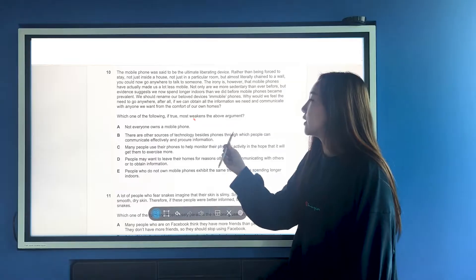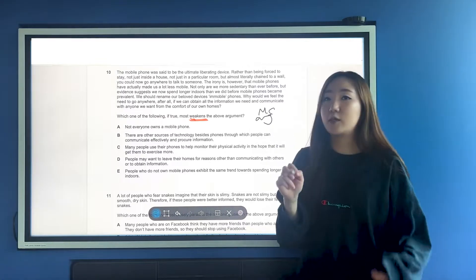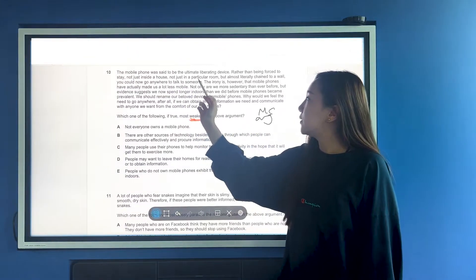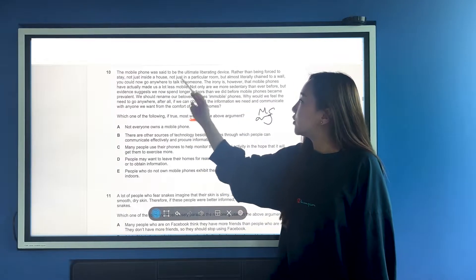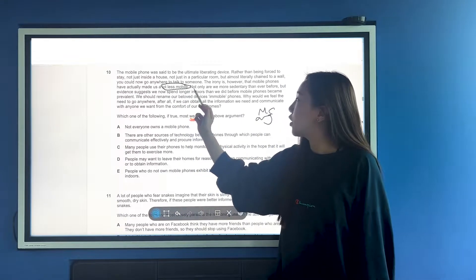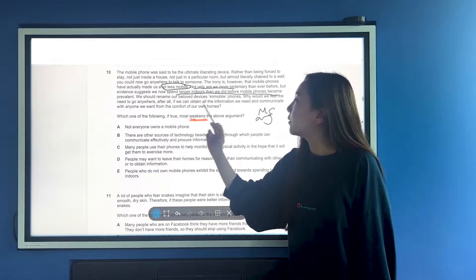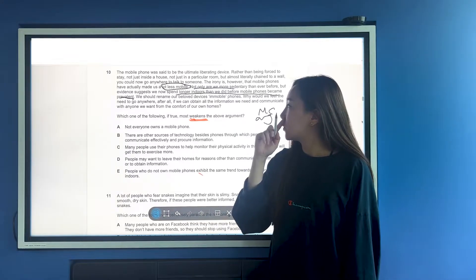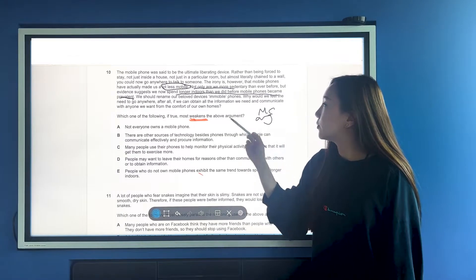Okay, so we've got the weakens the argument question here. In order to do this one, again, we need main conclusion, we need argument, and you want to kind of see an exemplification of whatever the flaw would be. So, let's have a look. The mobile phone was said to be the ultimate liberating device - rather than being forced to stay not just inside a house, not just in a particular room, you can go anywhere to talk to someone. The irony is that mobile phones have made us a lot less mobile.